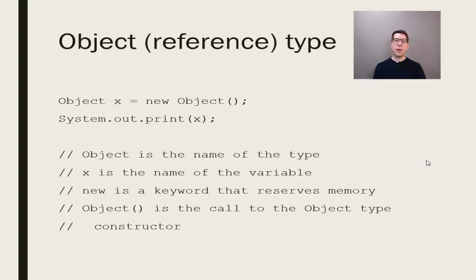Let's look at another example of this by creating a new object and printing it out to the terminal. Java has a reference type known as object, and it is the root of all user-defined objects. When we create an object, we do so declaring an object type variable and assigning the result of constructing a new object type.